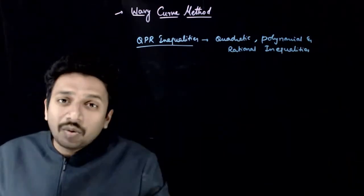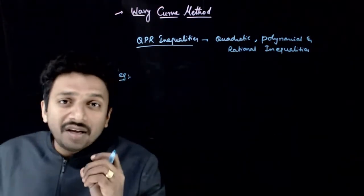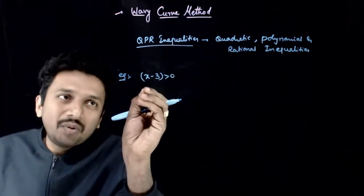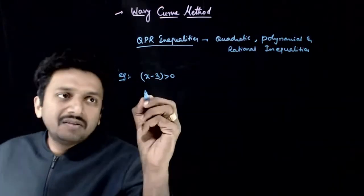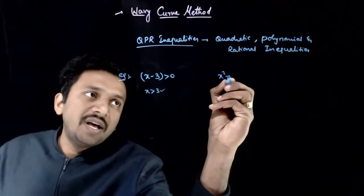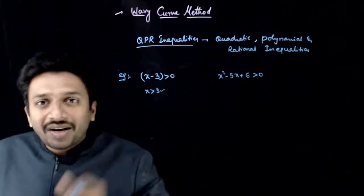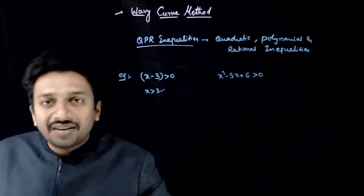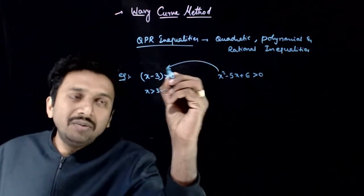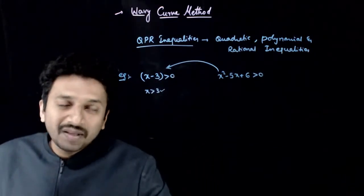So what are these inequalities? Let us try to analyze. Till now, you have learned how to solve linear inequalities — something like x minus 3 is greater than 0. These are very basic linear inequalities: x minus 3 greater than 0 implies x is greater than 3. Now, you will be asked to solve something like x squared minus 5x plus 6 greater than 0. This is a quadratic inequality.